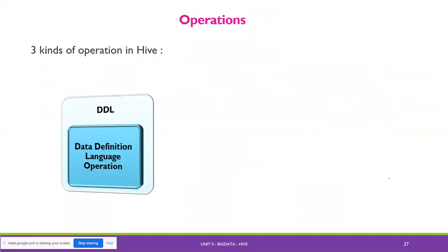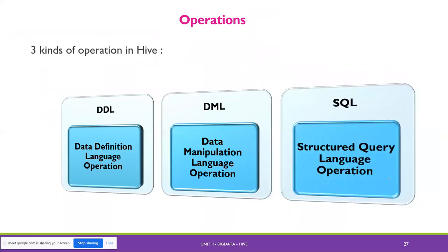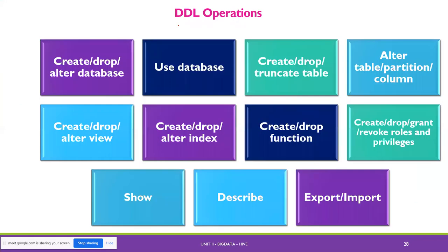Three types of operations in Hive: DDL (Data Definition Language), DML (Data Manipulation Language), and SQL (Structured Query Language). DDL operations include: create, drop and alter database; use database; create, drop, truncate table; alter table, partition, column; create, drop, alter view; create, drop, alter index; create, drop function; create, drop, grant, revoke roles and privileges; show, describe, export, import.